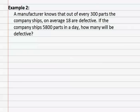The two things that we are comparing are how many the company ships and how many are defective. So let's write that to the side: ships and defective. We know that the first comparison was that for every 300 parts it ships, 18 are defective. Let's put that as our first fraction: 300 ships, 18 are defective.